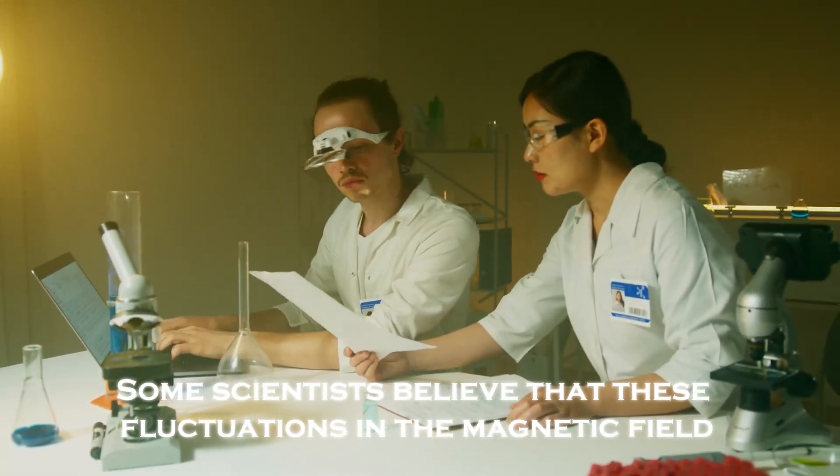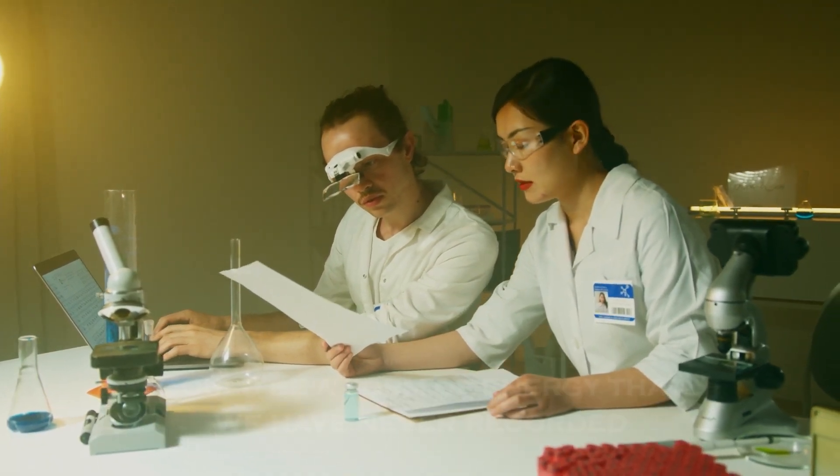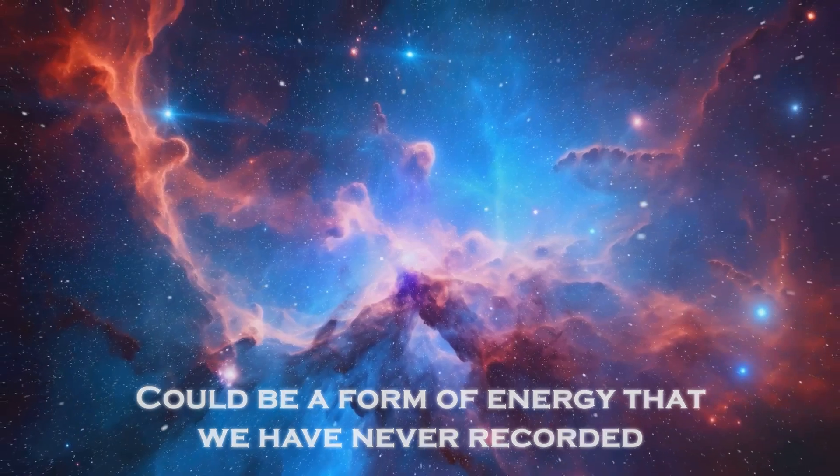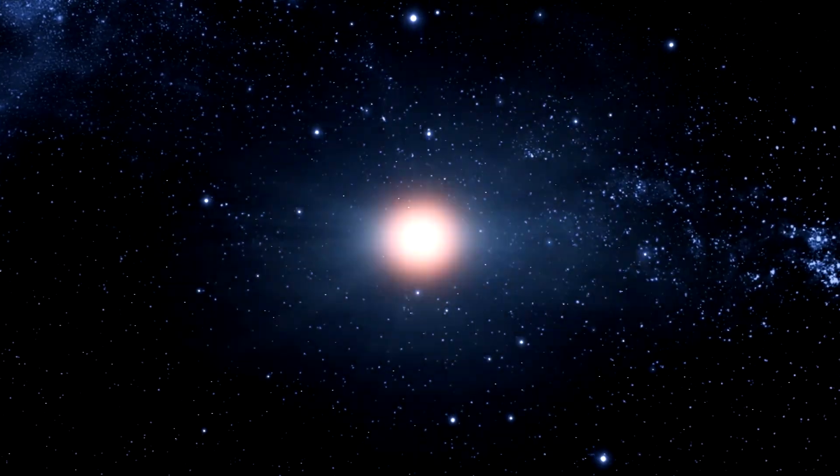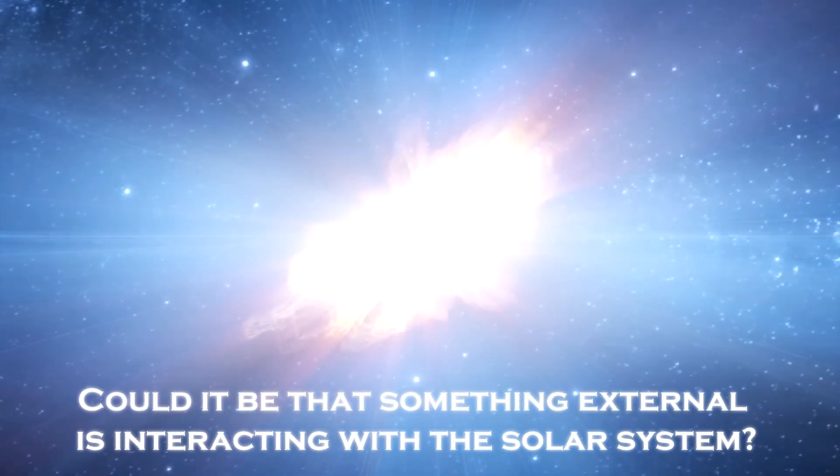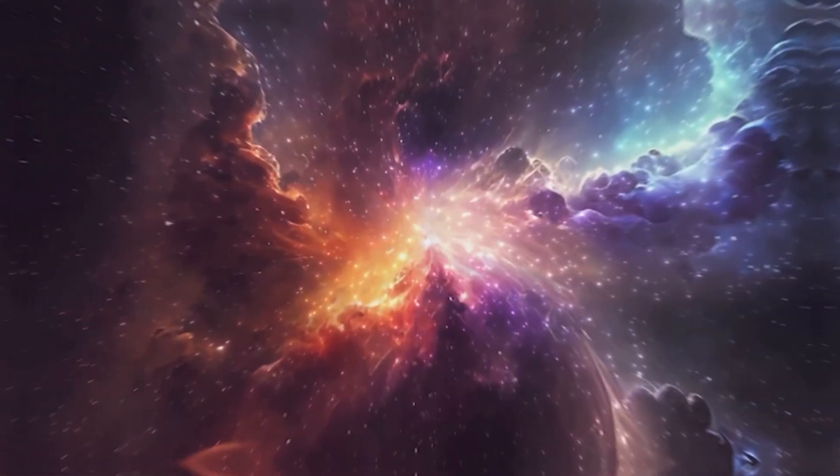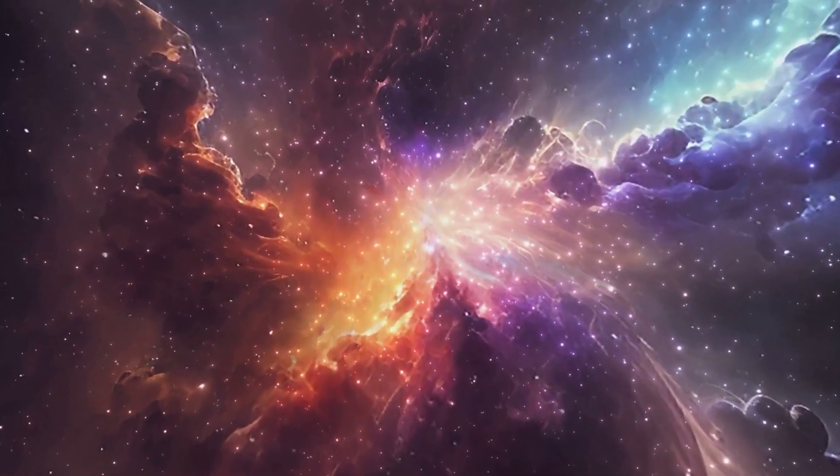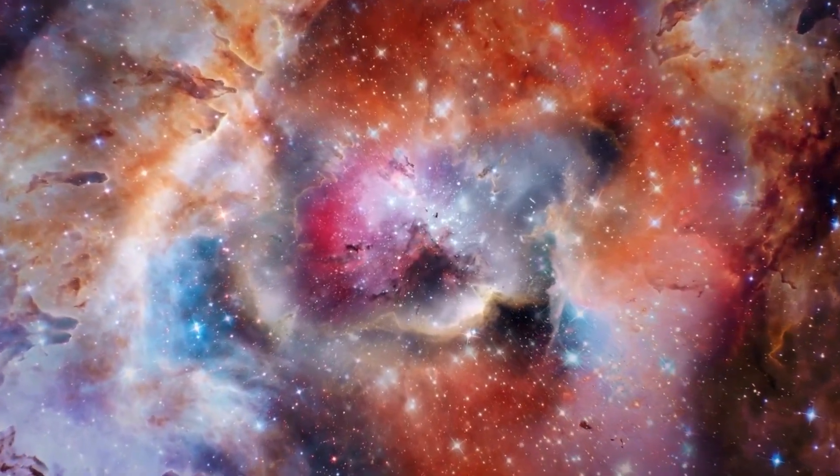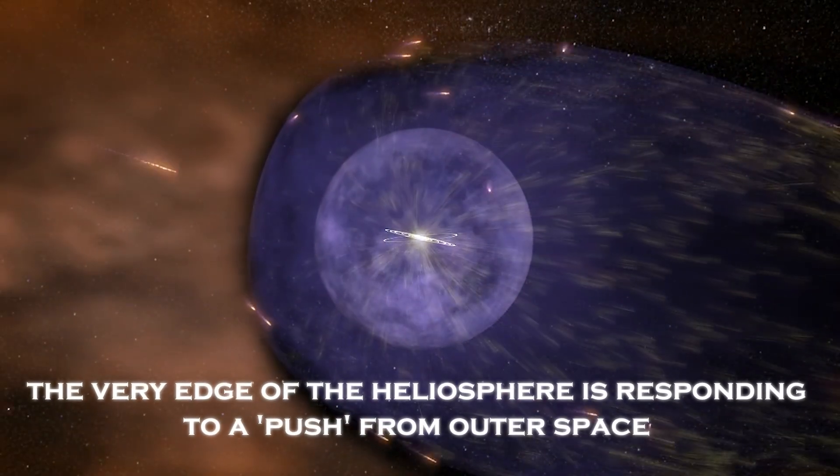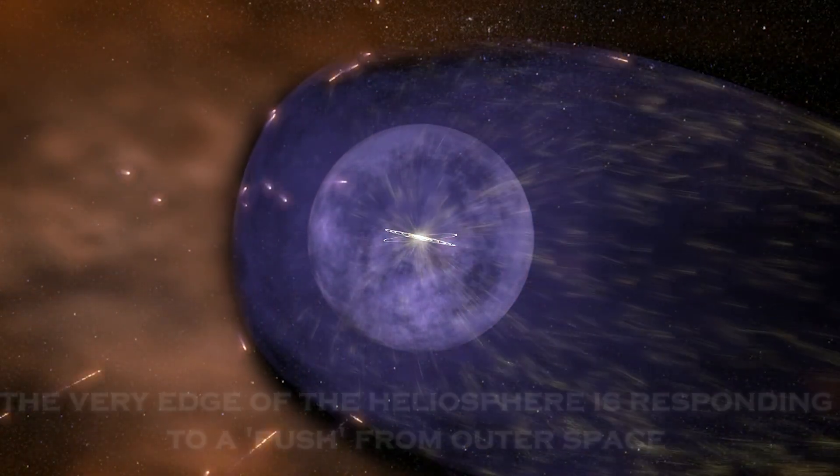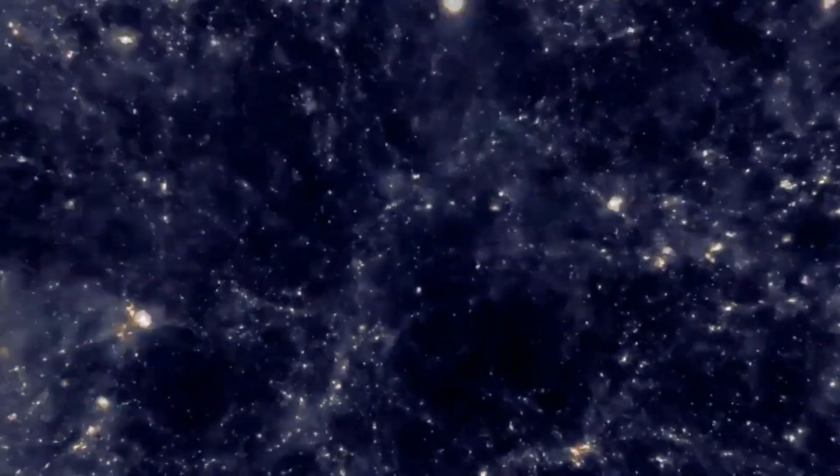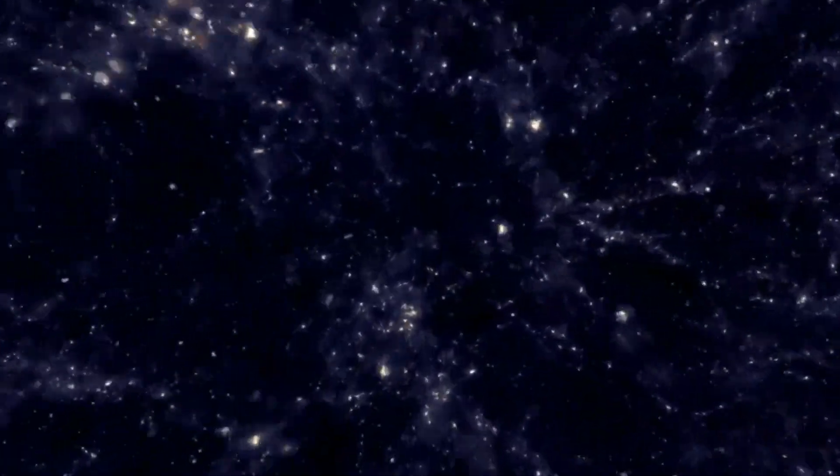Some scientists believe that these fluctuations in the magnetic field could be a form of energy that we have never recorded, a type of echo from the deep universe. But the theories get even more puzzling. Could it be that something external is interacting directly with the solar system? We are faced with the possibility that these magnetic vibrations are responses to phenomena outside the solar system. It is as if the very edge of the heliosphere is responding to a push from outer space. The signals are weak but repetitive and present patterns we have not observed before.